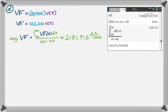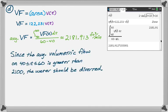So I'm going to say that, yeah—I mean, on that 20 minute period, it's greater than 2100. So we should be diverting. So I'm just going to write that down. Since the average volumetric flow on 40 to 60 is greater than 2100, the water should be diverted. All right. And that's it. I hope you found this helpful, and good luck.